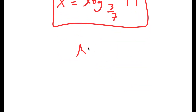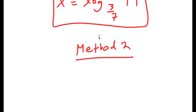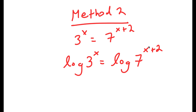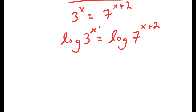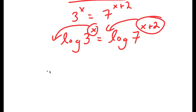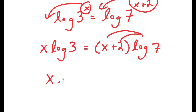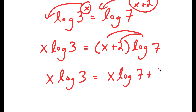Now for method 2, I have my equation again: 3 to the power of x is equal to 7 to the power of x plus 2. And I'm going to go ahead and immediately take the log on both sides this time. So I get log of 3 to the power of x is equal to log of 7 to the power of x plus 2. Now remember, if I have something in the form log a to the power of b, I can move b to the front. So I can move x to the front and x plus 2 to the front. So I get x times log 3 is equal to x plus 2 times log 7, and if I distribute log 7, I get x times log 3 is equal to x times log 7 plus 2 times log 7.